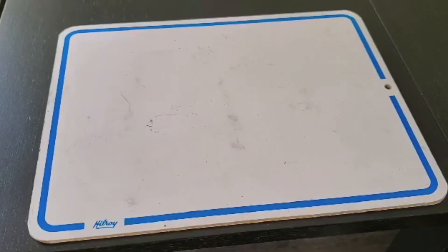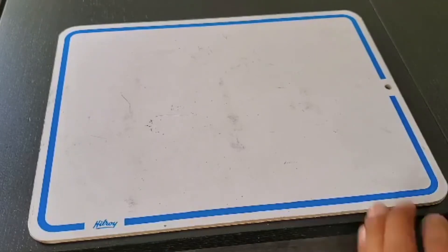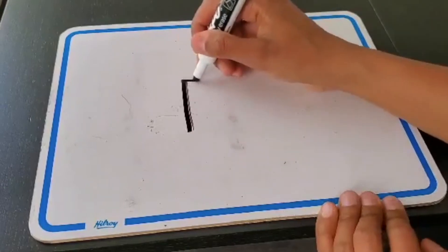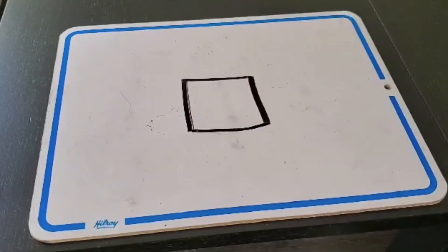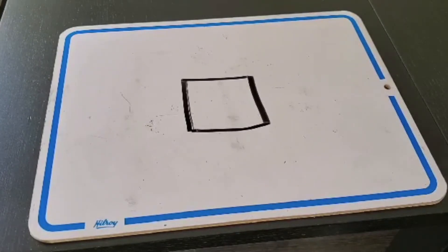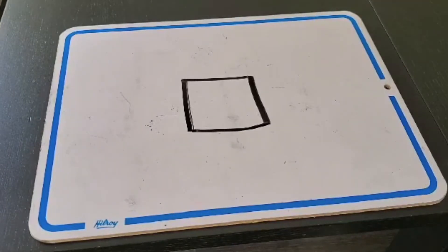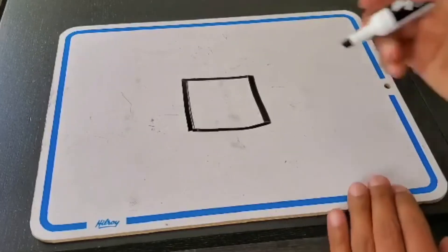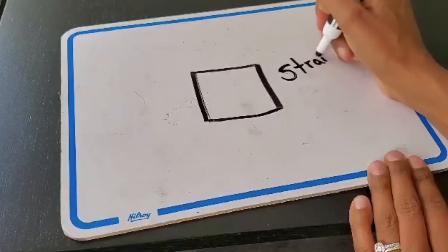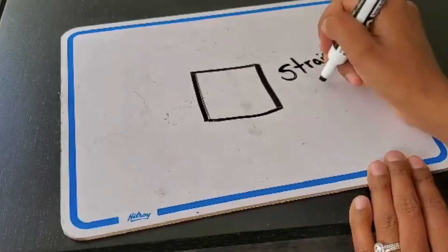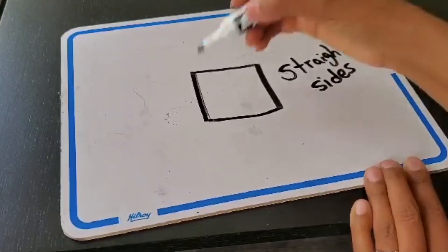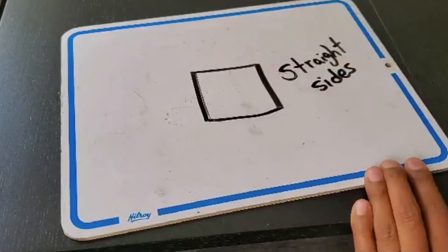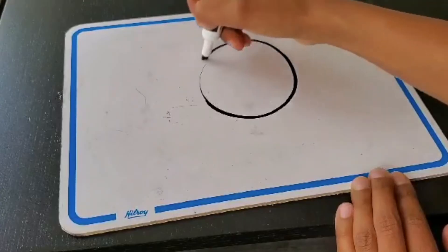Let's do some examples. I'm going to draw a shape and I want you to tell me what the shape is and if its sides are curved or straight. Here I have a shape — what shape is that? This is called a square. Does this square have sides that are curved or straight? If you said straight, you are absolutely correct. This shape has straight sides because it's made out of straight lines.